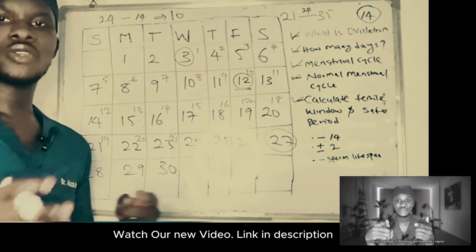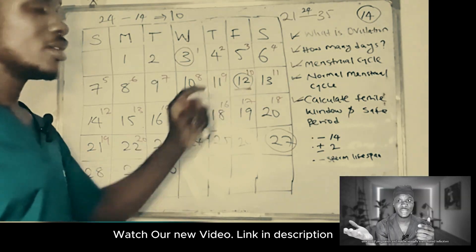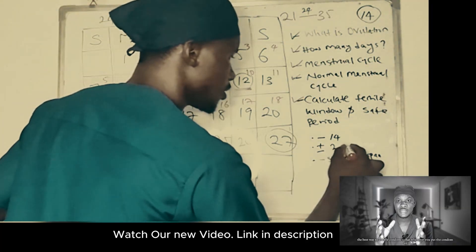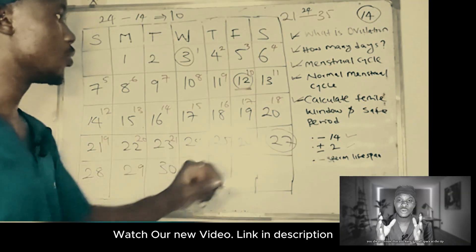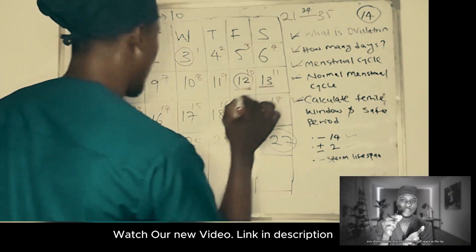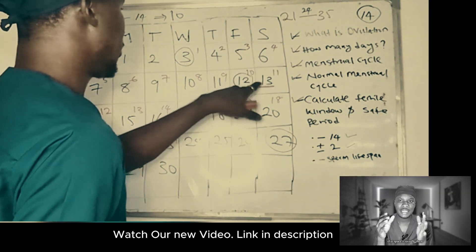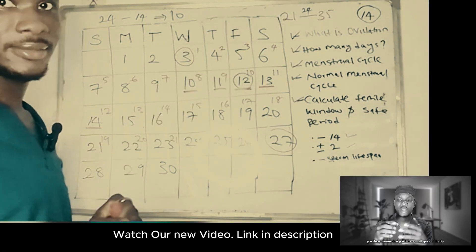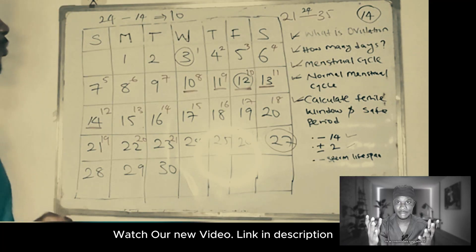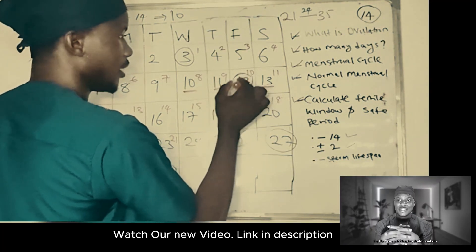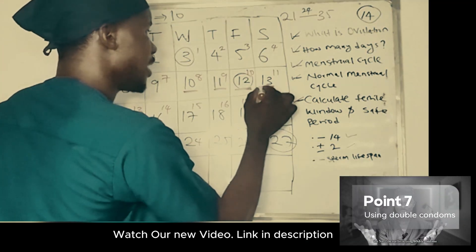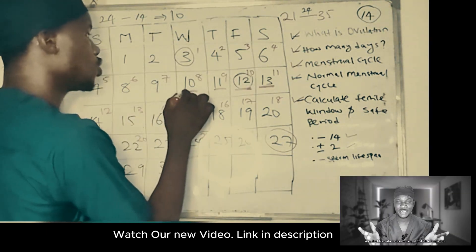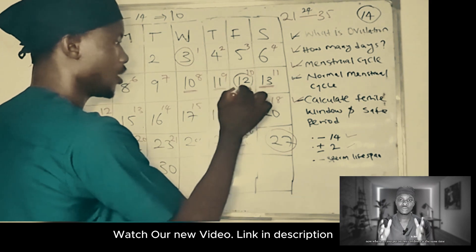It is not always certain that she will ovulate exactly on that day — sometimes she might ovulate two days before, and sometimes two days after. This is where the second tip comes in: plus or minus two. Adding two days to day 10 gives us days 12 and 13, and subtracting two days gives us days 8 and 9. So Alice's ovulation window covers days 8 through 12 of her cycle.